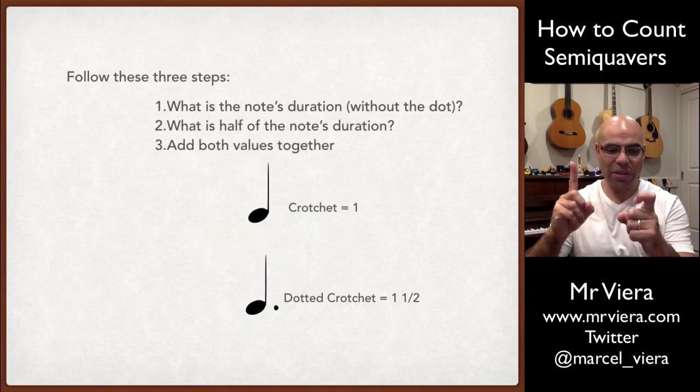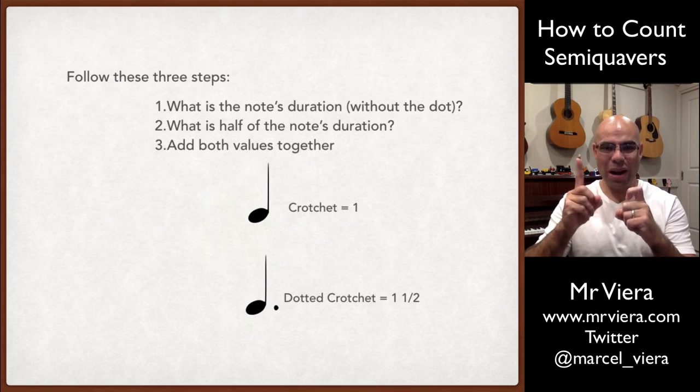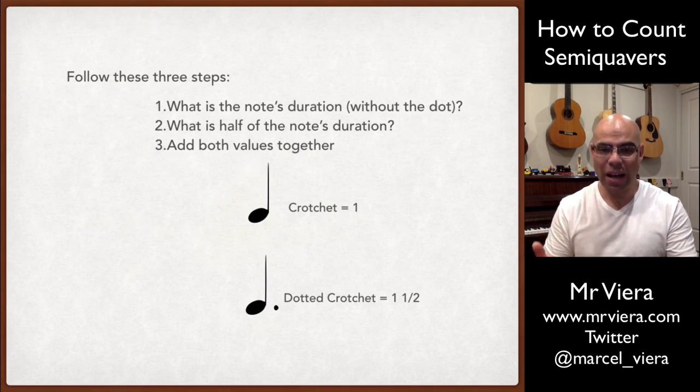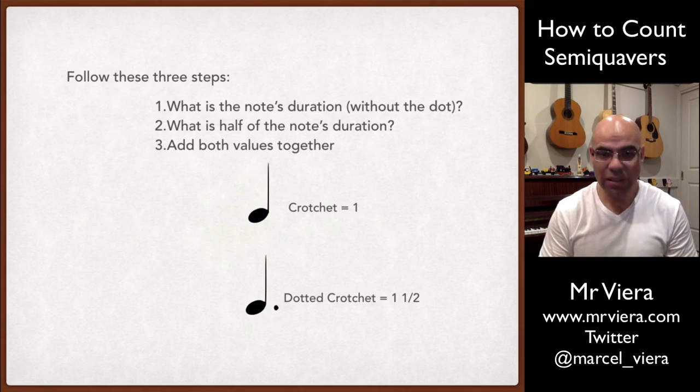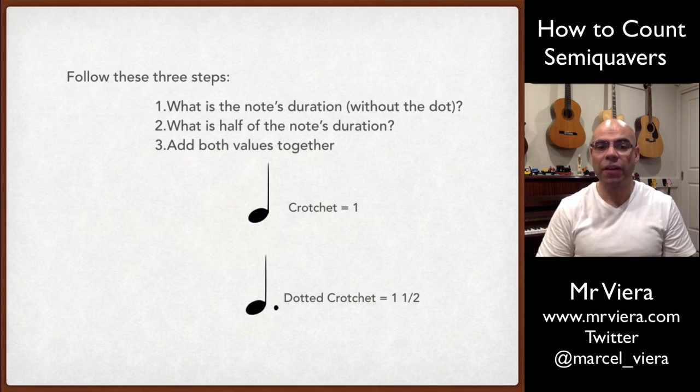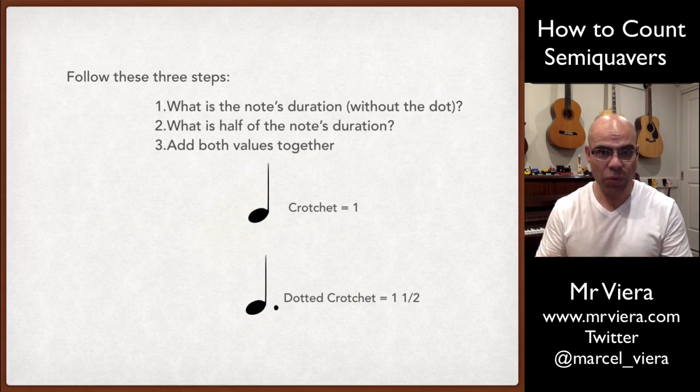you add half of the original value. So here's half a finger. And one plus a half equals one and a half. So our musical representation for when you want one and a half beats is a dotted crotchet. So it applies to any of our note values and for that matter rests as well.